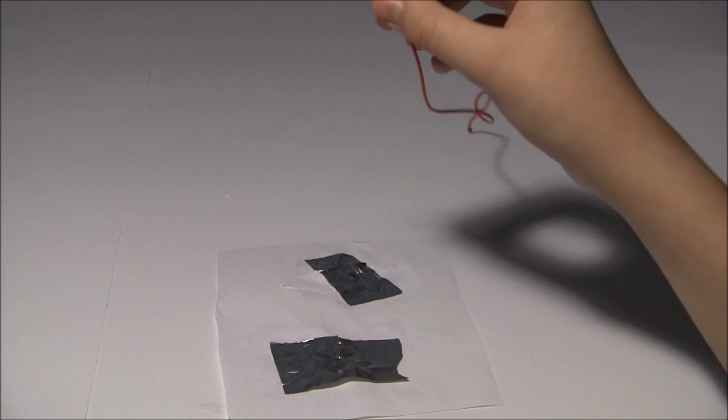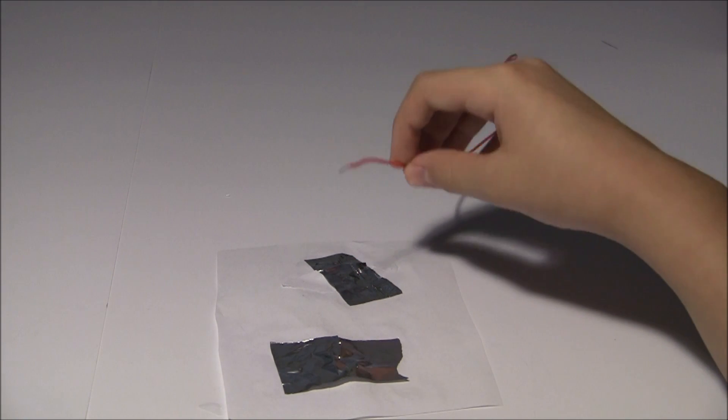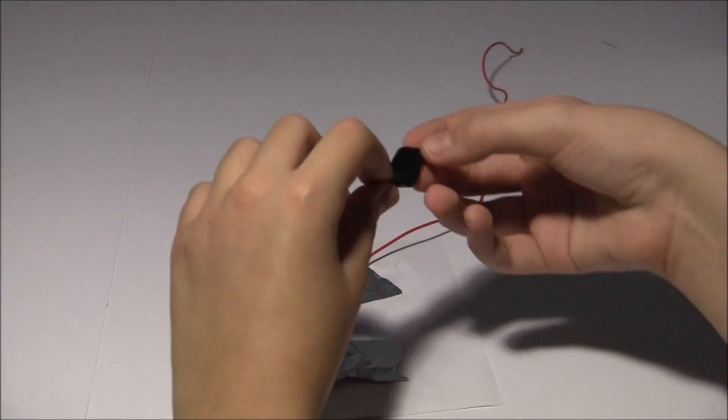Use the electrical tape to tape a wire to one side of the aluminum foil. Do the same on the opposite side.